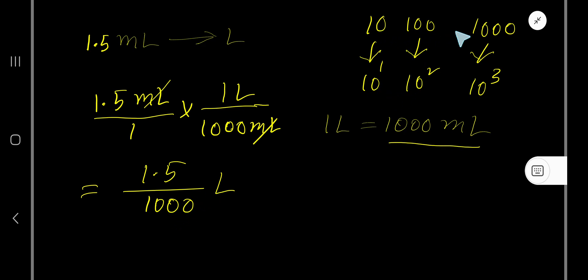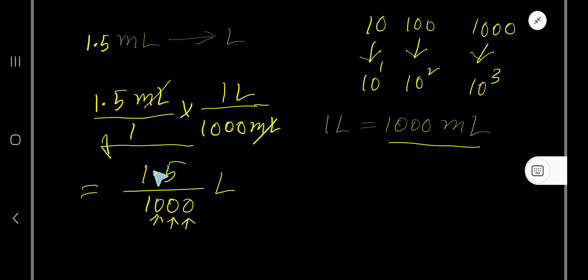Now divide this decimal number by 1,000. Ten, hundred, thousand — these are called powers of ten. To divide a decimal by a power of ten, just count the number of zeros and move the decimal point from right to left equal to that number of zeros. Since 1,000 has three zeros, we move the decimal point three places from right to left.